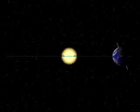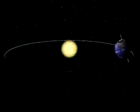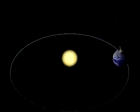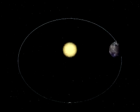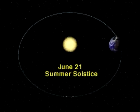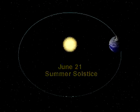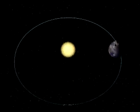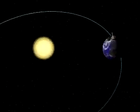To better see why, let's view the Earth-Sun plane from a different perspective. We begin with the summer solstice, when Earth's north pole is tilted toward the Sun.